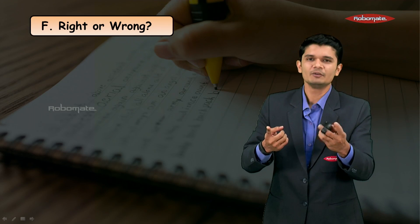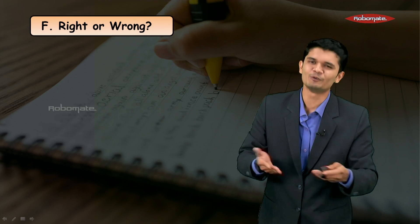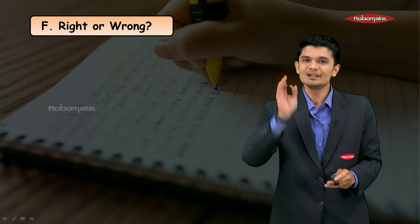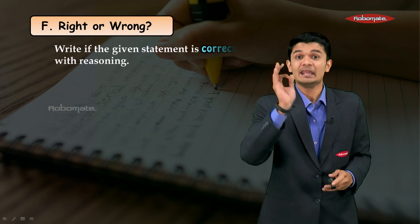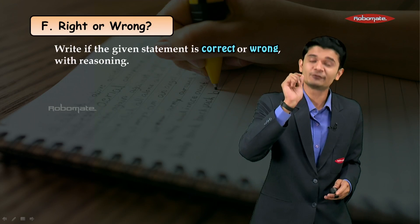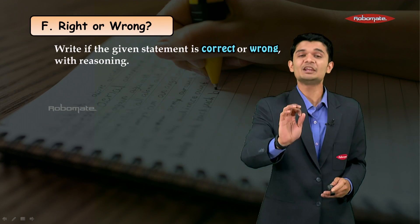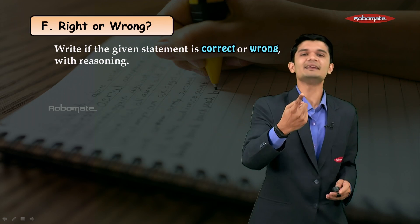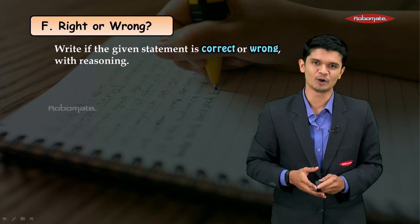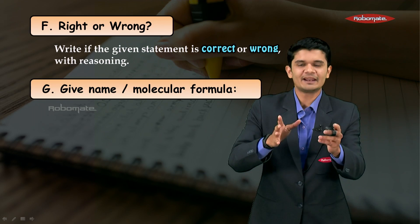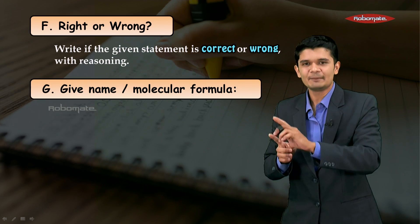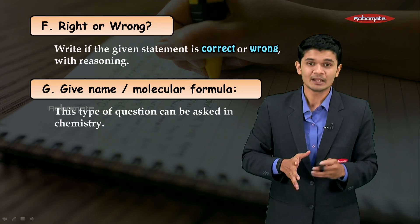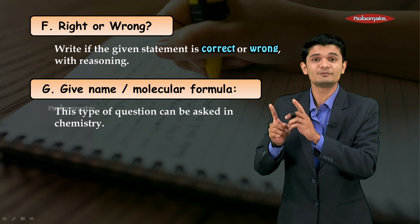Let's go for right or wrong, which is basically true or false. In this section, do not just write if it's true or false. If the answer is false, make sure to write the reasoning for why the answer is going to be false.